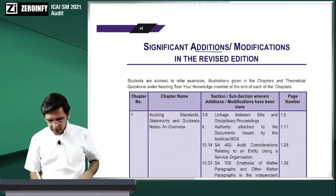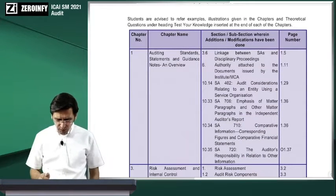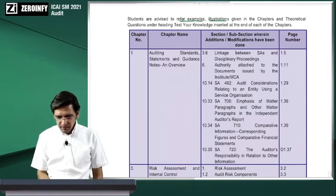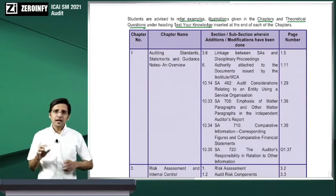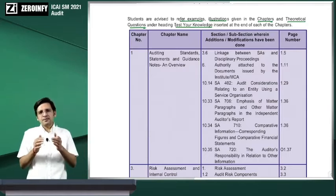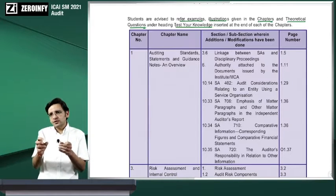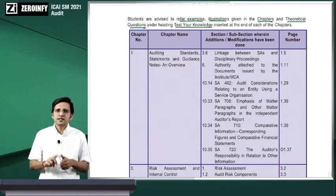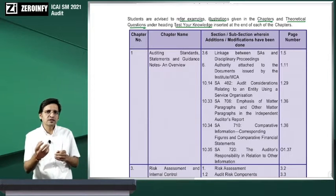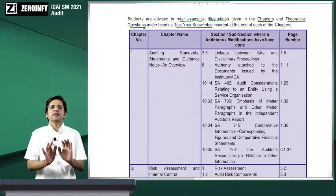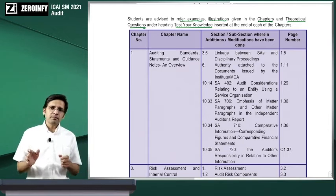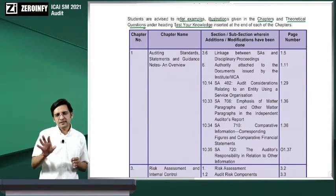Aur agar main initial pages open karta hoon toh yahan pe inhone clarify bhi kiya hai ki yeh jo humara November 2020 edition hai, is mein what all changes have we done. So this is basically what they have written. Institute ne kaha hai ki humne kya edition modifications kiye hain - students are advised to refer examples, illustrations given in the respective chapter, theoretical questions, test your knowledge, etc. Unlike FR, jahaan pe institute ne jo table banaya hai jismein bataya hai kya kya changes hain - wahan pe unhone yeh bhi bataya ki konse questions inhone A - add kiye hain, B - amend kiye hain, ya modify kiye hain, unke answers change kiye hain, ya unmein koi additional points add kiye. Audit mein unhone questions ke baare mein kahi par bhi initial pages mein specify nahi kiya.